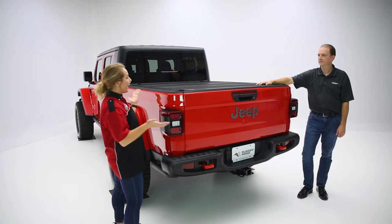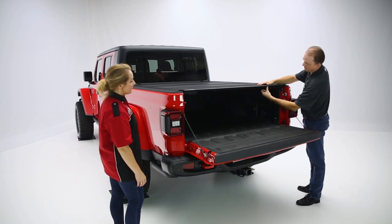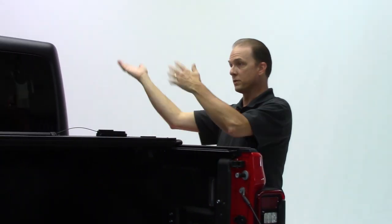So let's take a look at how it works. Sure. This tri-fold cover has latches on either side. Simple cable pull. You can operate it from either end. It opens in three different sections.